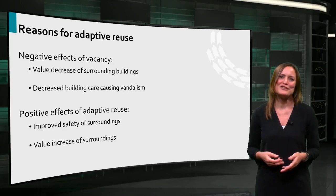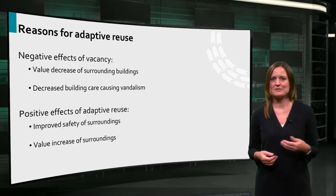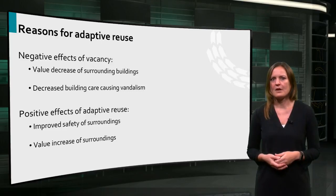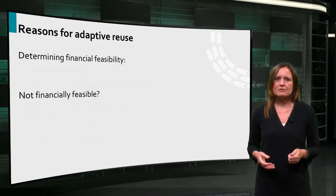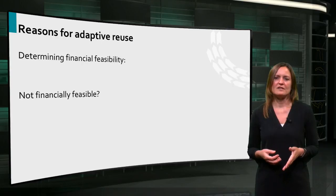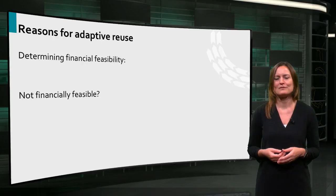Demolition and new build, on the other hand, leads to disruption, uncertainty and social unrest. Adaptive reuse is often perceived as not financially feasible, and the lack of financial feasibility is often referred to as the reason for new build.